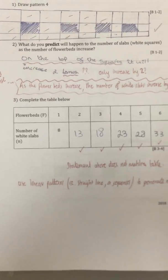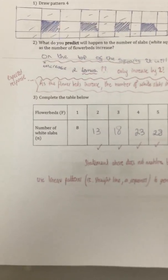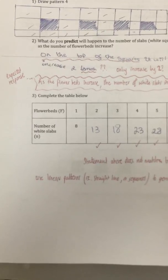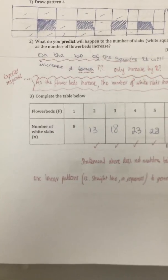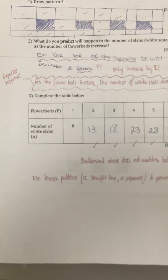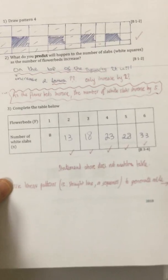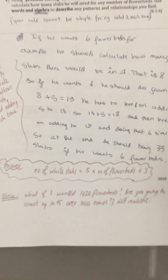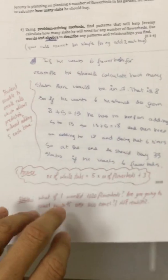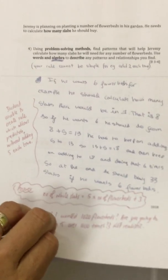To get the plus 3, another method is: when there's 0 flower beds, how many white slabs are there? Well, when there are 0 flower beds there would only be 3. That's where the general rule gets the 'add 3' part as well. So once you have your general rule, what do you do next? You want to show the teacher that you can verify it.